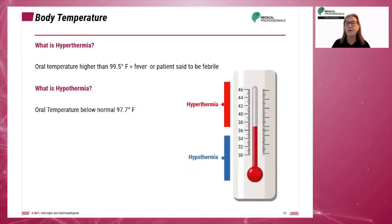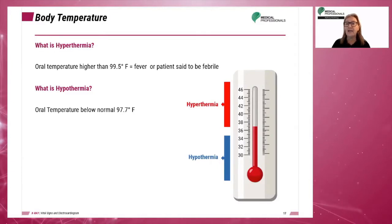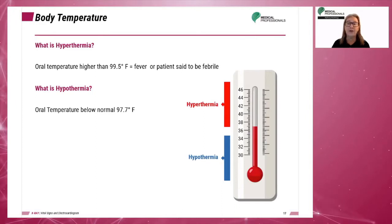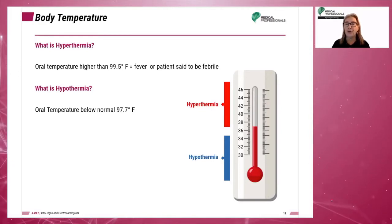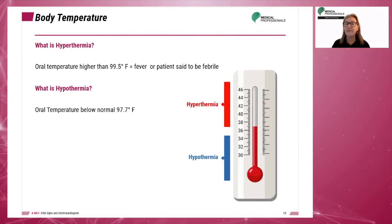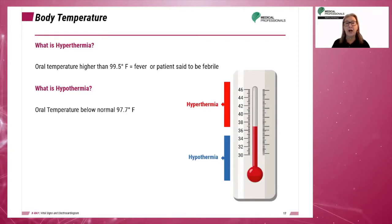Hyperthermia is an oral temperature higher than 99.5 degrees Fahrenheit. The patient is said to be febrile or to have a fever. Fevers are common with viral and bacterial infections as a natural response of the body to increased cellular activity. On the other hand, hypothermia is an oral temperature below normal at 97.7 degrees Fahrenheit. Medically induced hypothermia can be used during some surgical procedures, such as heart surgery, to decrease the metabolic demands.